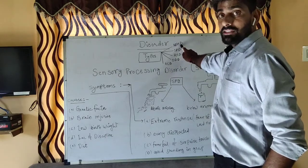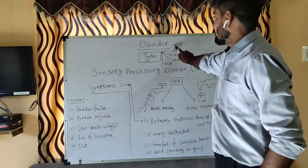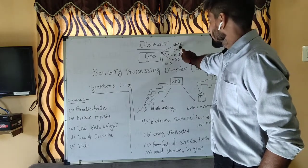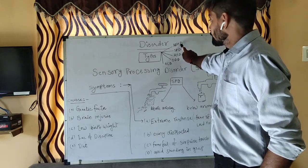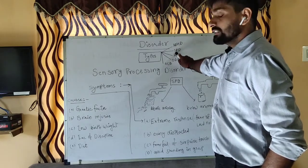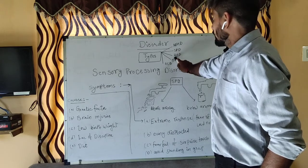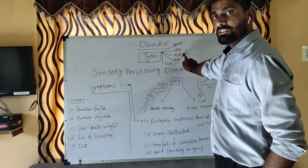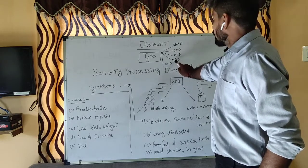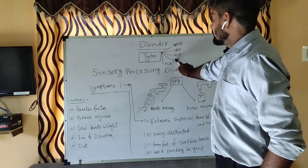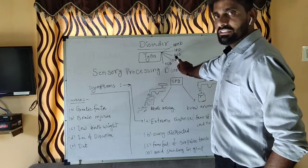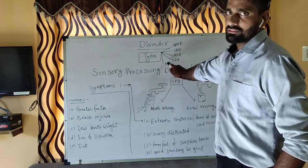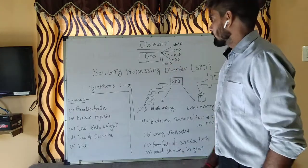ADHD stands for Attention Deficit Hyperactivity Disorder. SPD is Sensory Processing Disorder. ASD is Autism Spectrum Disorder. ODD is Oppositional Defiant Disorder. OCD is Obsessive Compulsive Disorder.